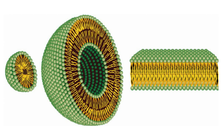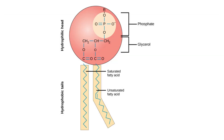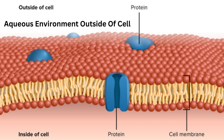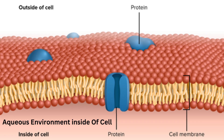It's called a bilayer because it's two layers of phospholipids, which each have a phosphate group similar to the carboxylate group in the soap molecules, with formal charges that can interact with water molecules, and non-polar fatty acid tails — one saturated, the other unsaturated — which prefer to stay hidden from water molecules. One layer faces outwards to the aqueous environment outside of the cell, and the other layer faces inwards to the aqueous environment inside the cell.